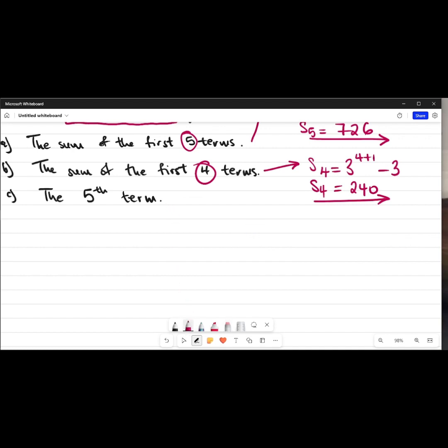To answer now the last question, they are saying here the fifth term. Let us find the fifth term. That means I'm looking for term 5. Now remember at the top I said to find any term, you say the sum of the first numbers of the term minus the sum of the previous one. Now in our case we're looking for term 5, so I'll just say the sum of the first 5 terms minus the sum of the previous one, which in our case would be...